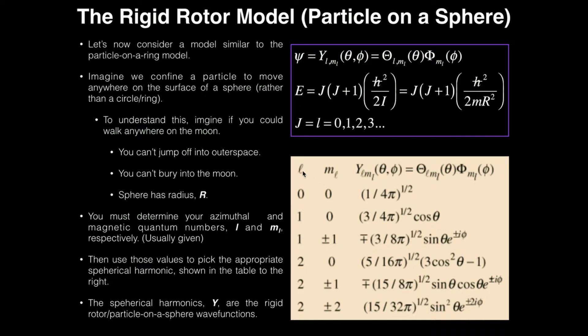If you've got an azimuthal quantum number of 2 and you've got a magnetic quantum number of, let's say, positive 2, then this is going to be your wave function. This is going to be your spherical harmonic right here.